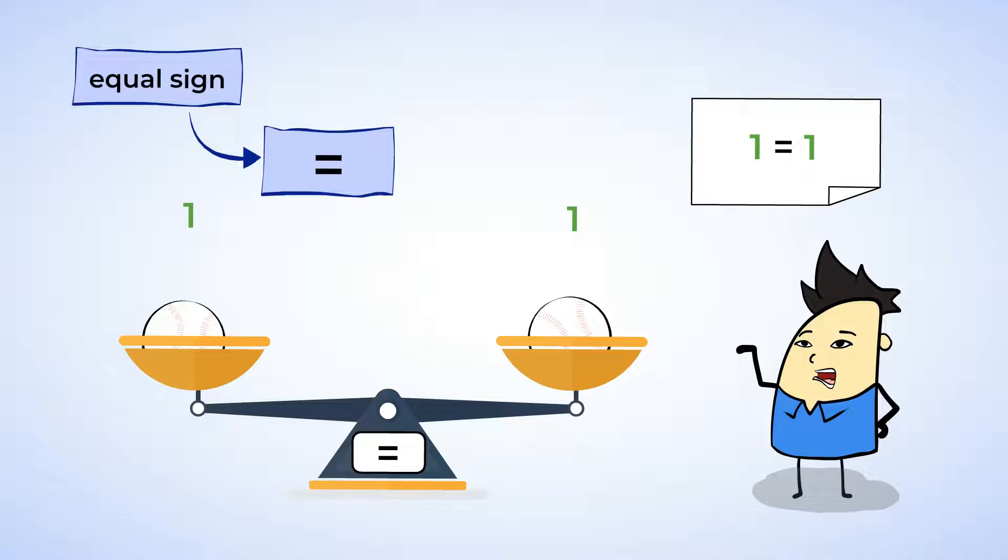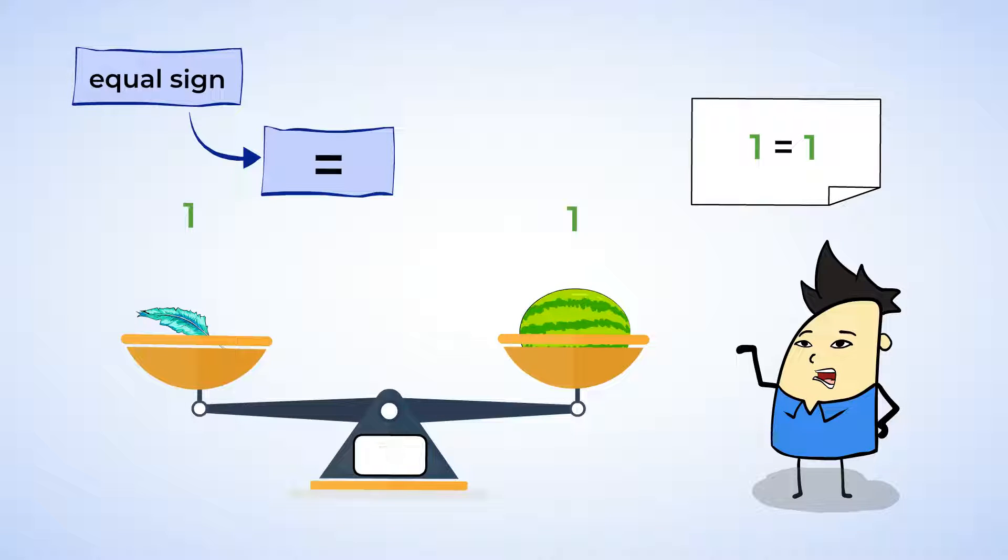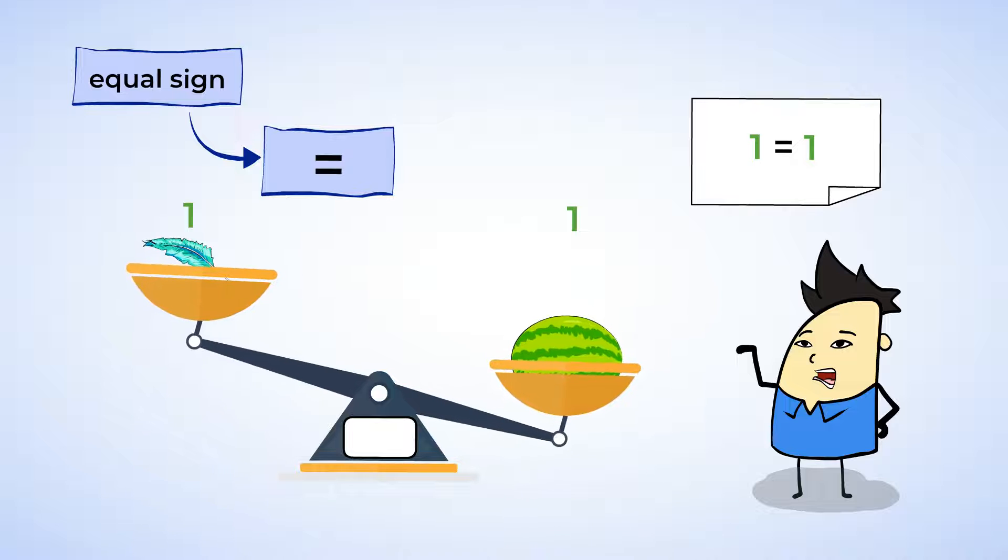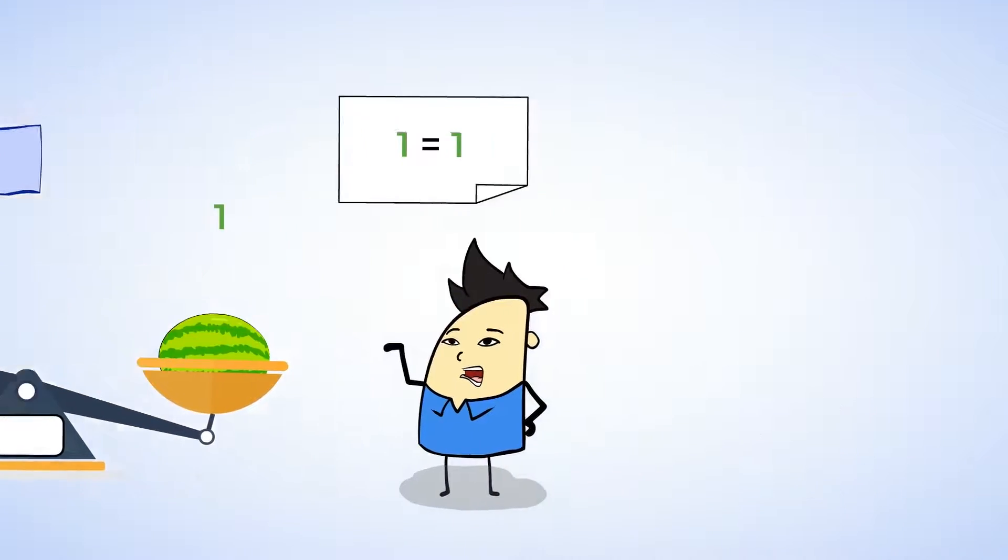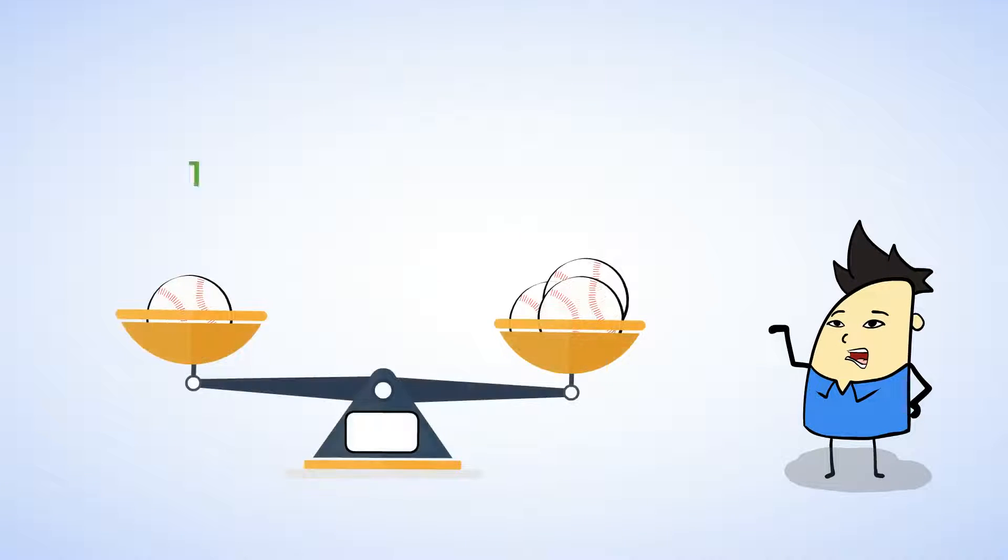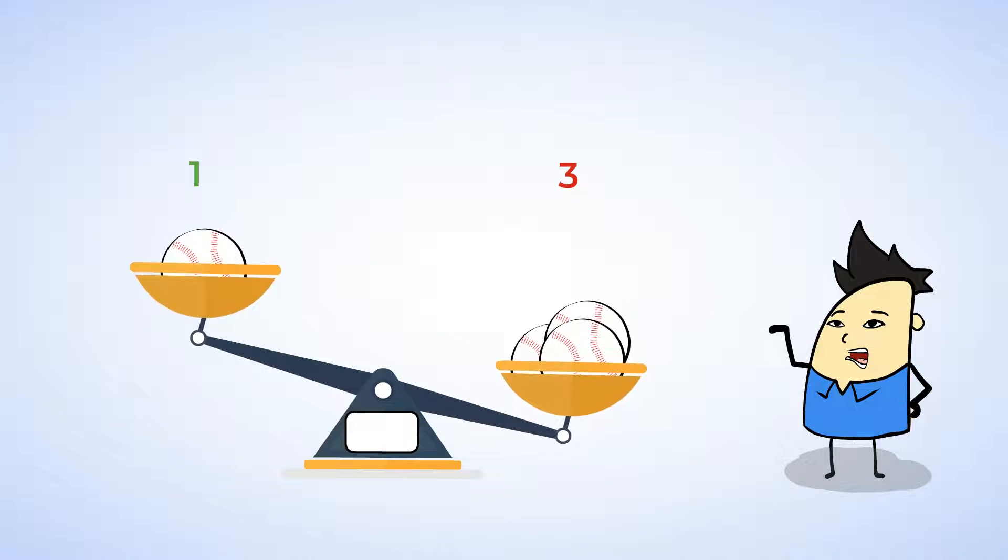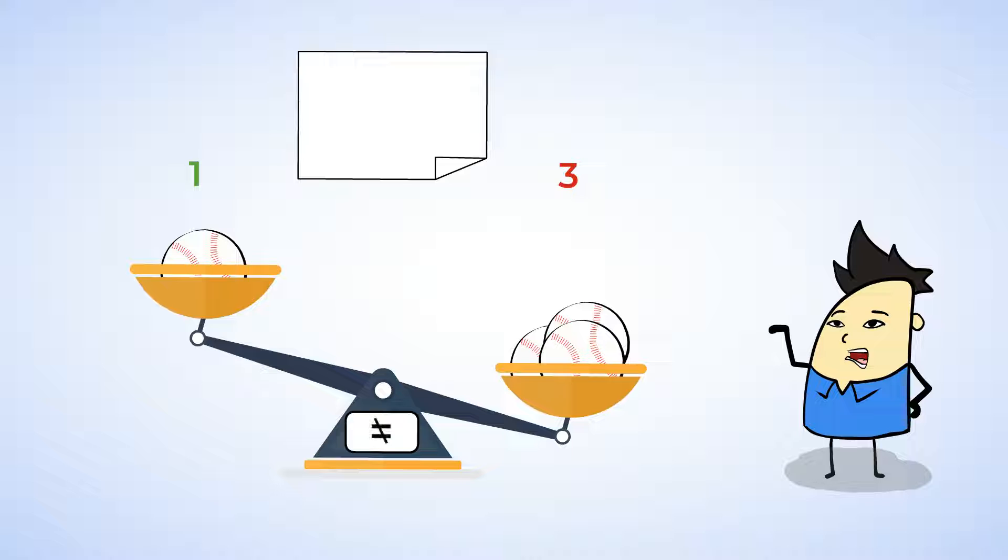If you put something heavy on one side, and something light on the other side, well, the side with the heavier object will go down, because the two sides are not balanced. So let's put one baseball on the left side, and three baseballs on the right side. And now the right side will go down. Now, these numbers are not the same, and so we cannot use the equal sign, because one and three are not equal. And so we should cross out the equal sign.